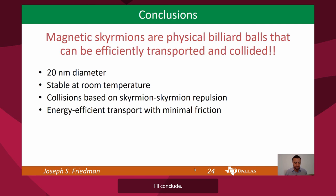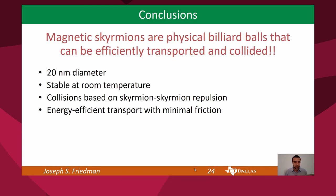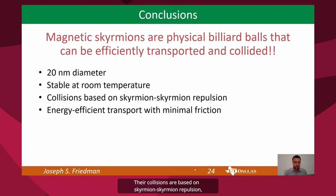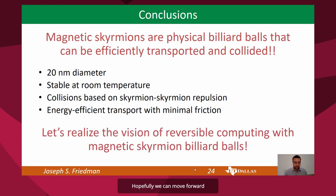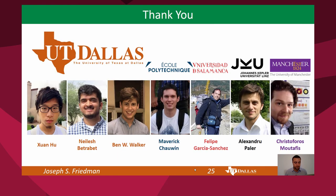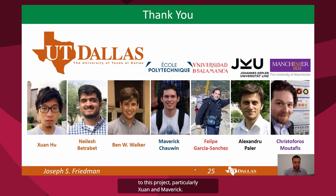With that, I'll conclude. We have proposed the first nanoscale billiard ball computing system, as magnetic skyrmions are physical billiard balls that can be efficiently transported and collided. Their diameter can be roughly 20 nanometers, they are stable at room temperature, and are non-volatile. Their collisions are based on skyrmion-skyrmion repulsion, and they are energy efficient and can be transported with minimal friction. Hopefully, we can move forward and realize this vision of reversible computing with magnetic skyrmion billiard balls, 40 years after the initial billiard ball computing proposal. Finally, I would like to thank my students and collaborators, particularly Sean and Maverick. Thank you for your attention.